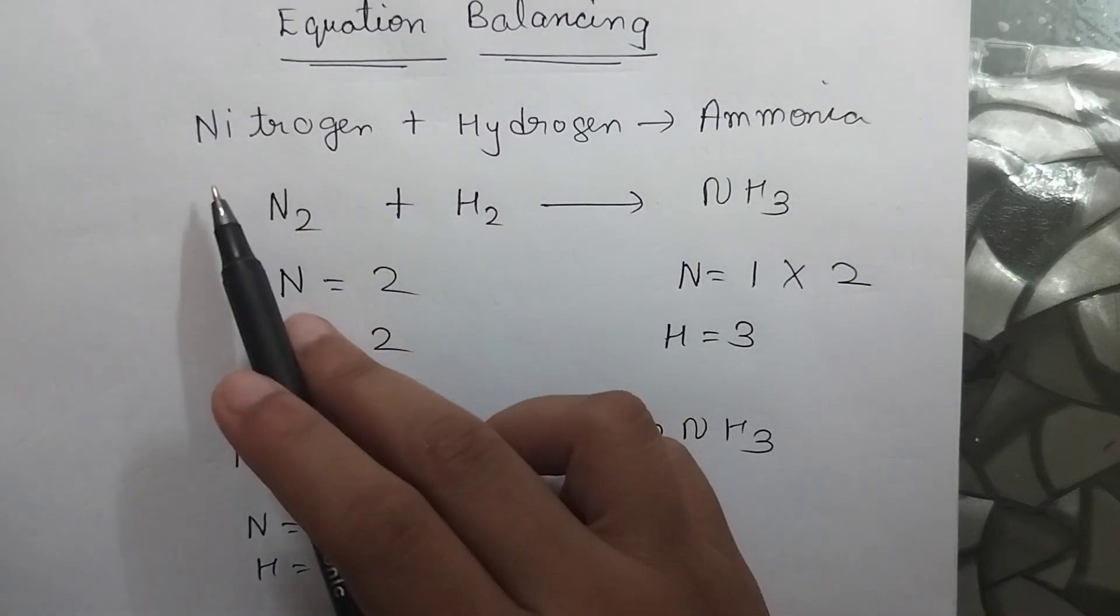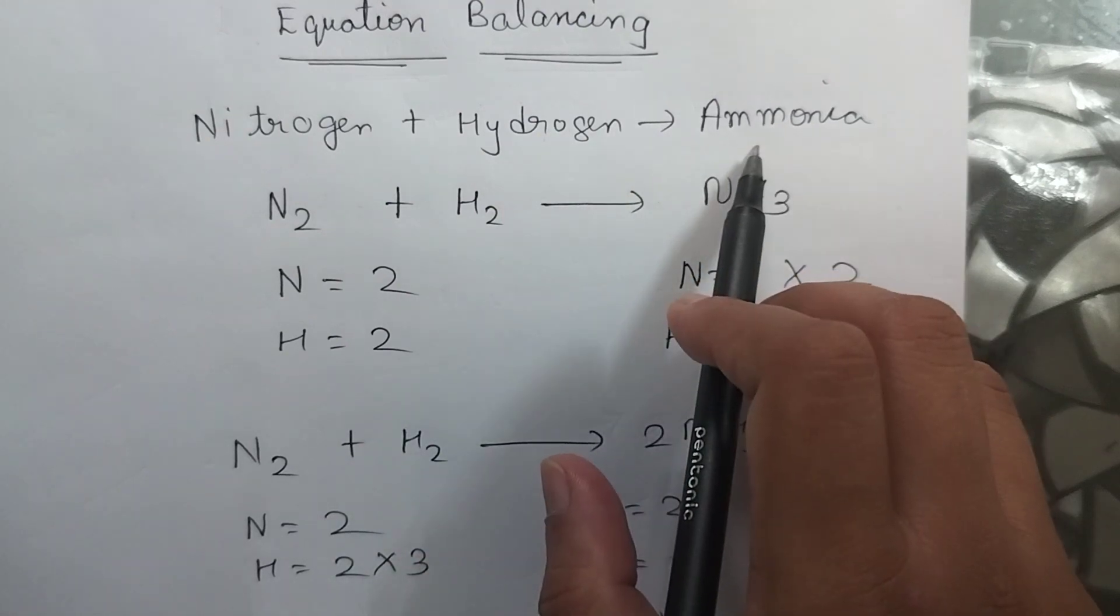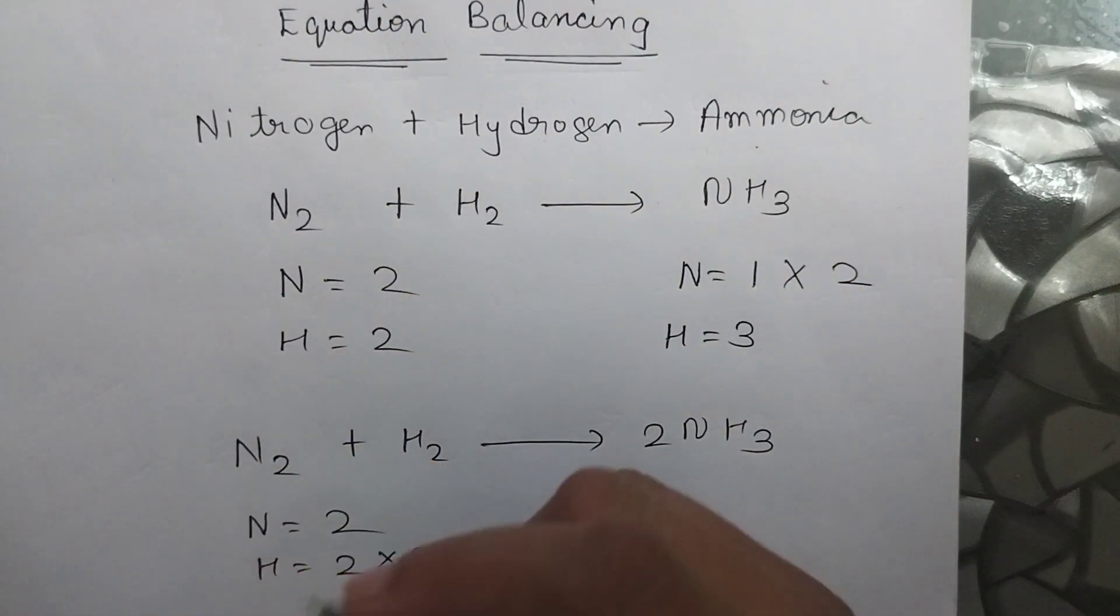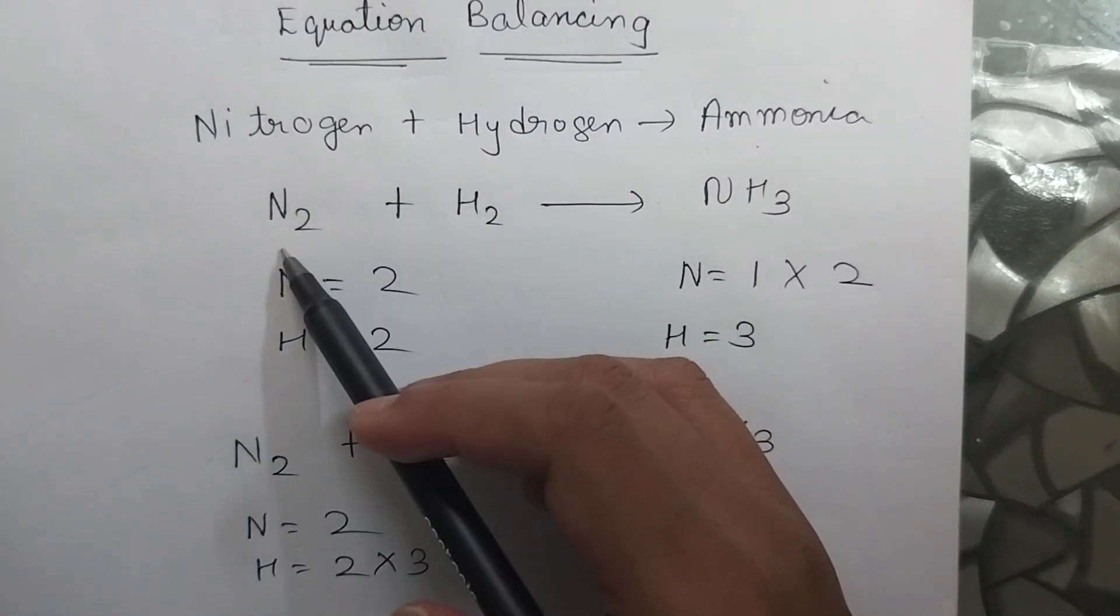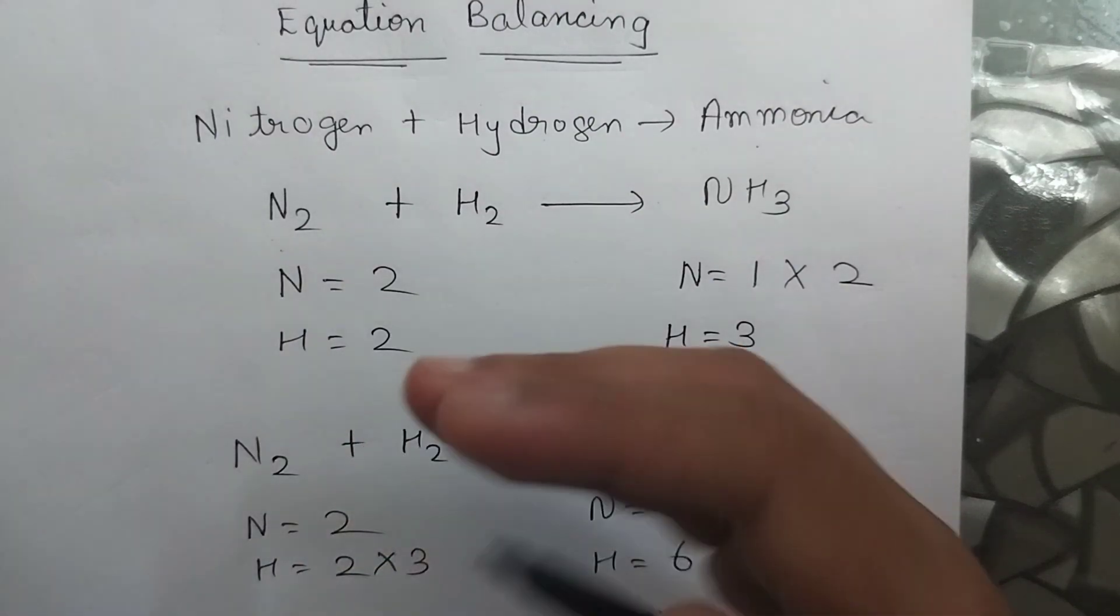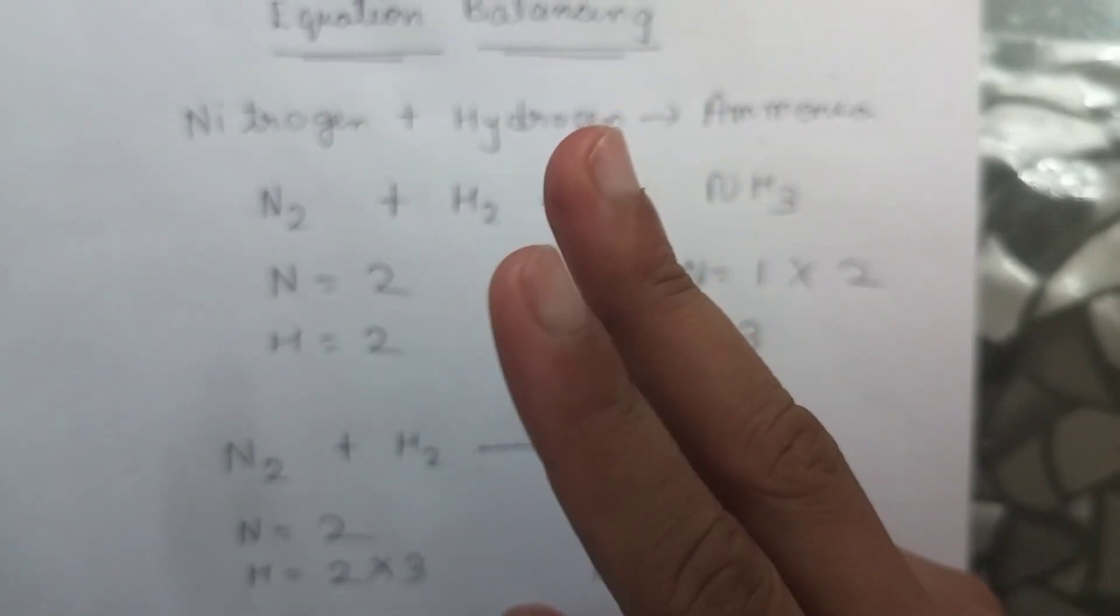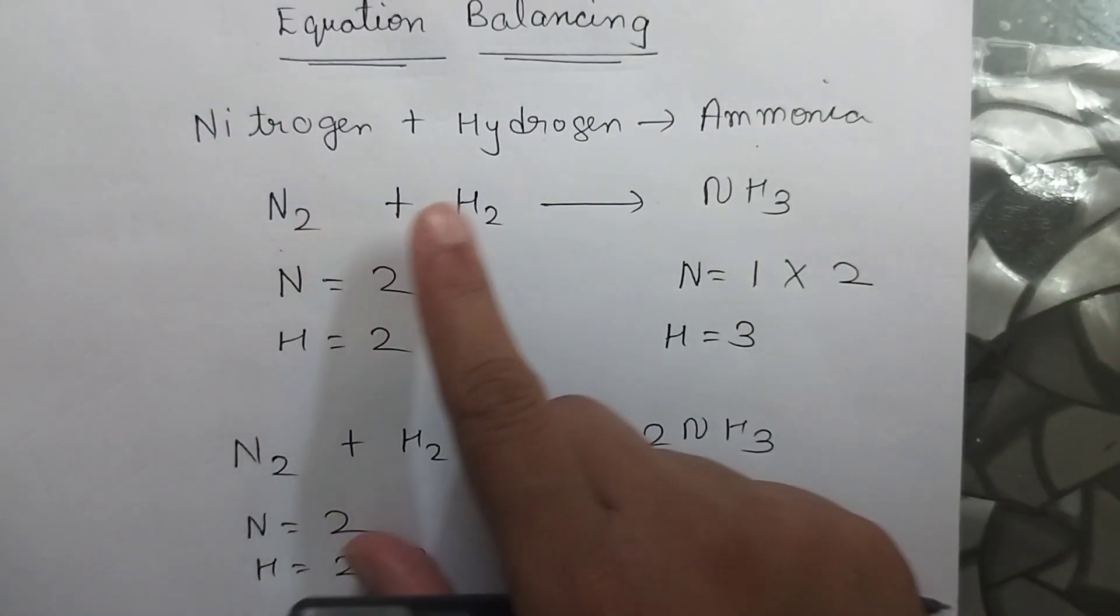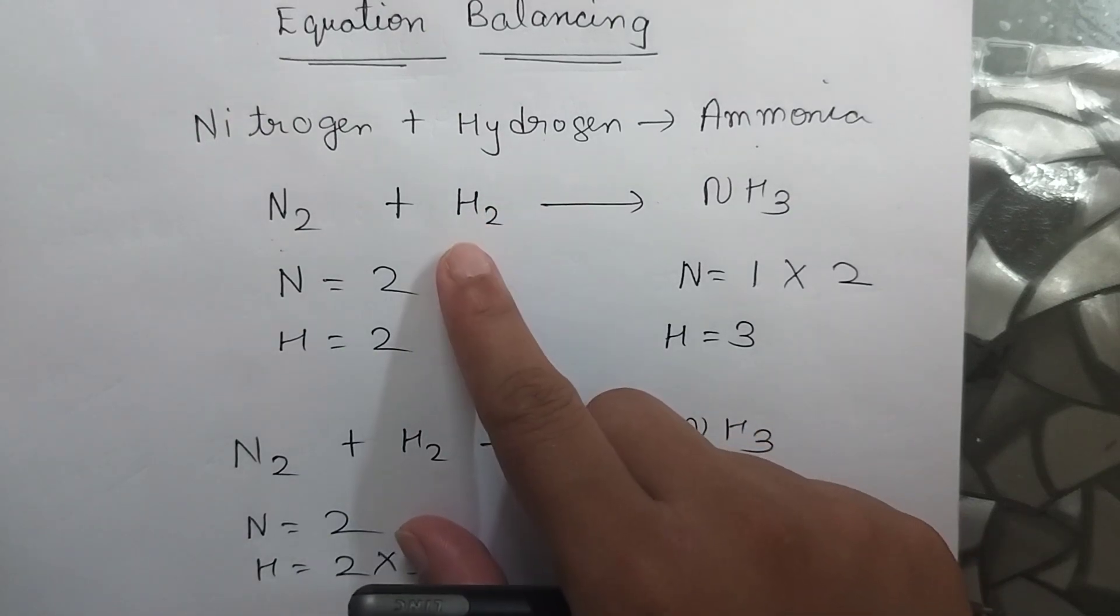So this is the word equation. Nitrogen plus hydrogen give rise to ammonia. The first step is converted into a chemical equation. So for nitrogen we will write N2. Why not N? Because nitrogen never exists in the form of N. It is not stable. Every gas exists in the form of a kind of a duplet structure. So nitrogen exists as N2. Similarly hydrogen is a gas also exists as H2.